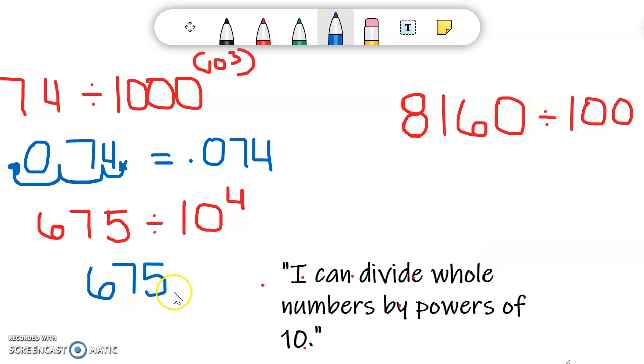Step two, I want to put a decimal point to the far right, which is after the five. Step three, I'm going to move my decimal point to the left as many places as there are zeros. And in this particular example, I have four zeros.